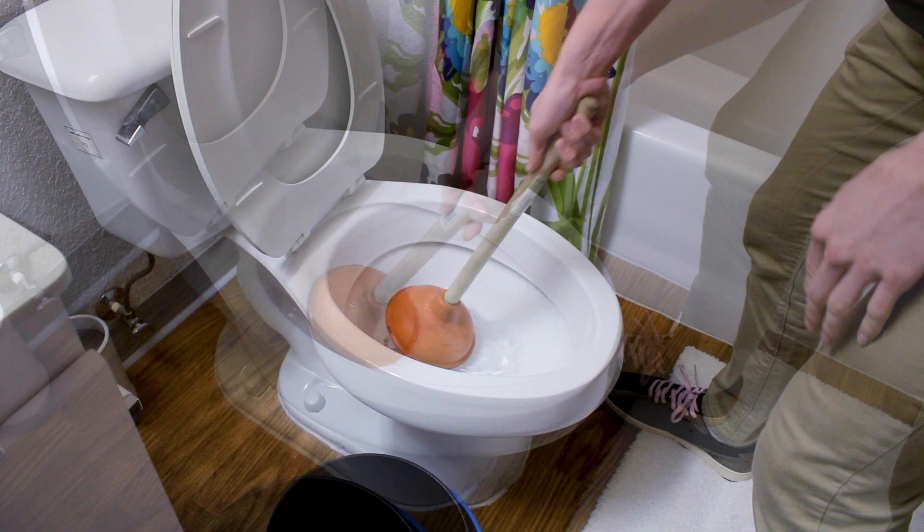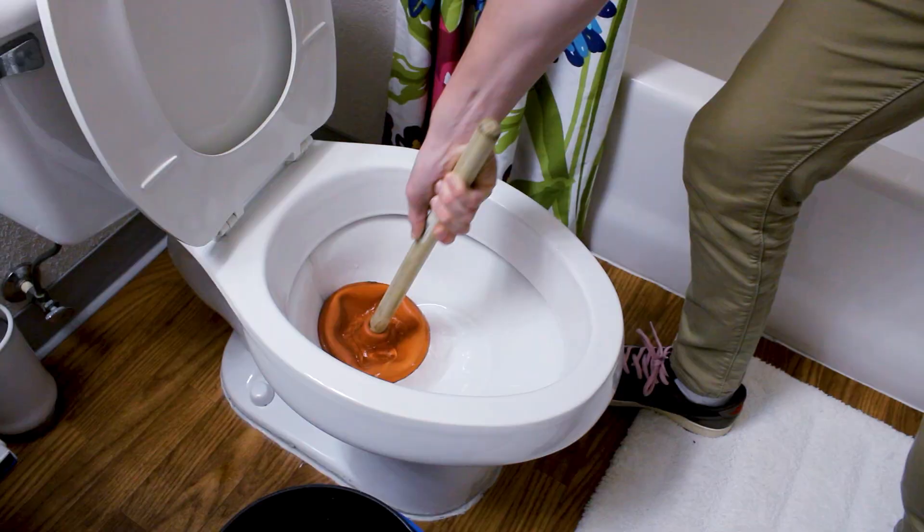Push the plunger up and down without breaking the suction seal. Continue plunging for about 15 seconds and then pull the plunger upwards sharply, releasing the suction.